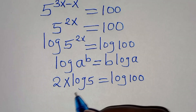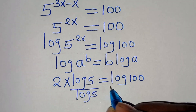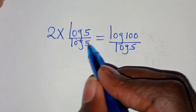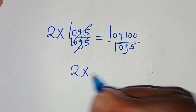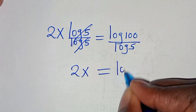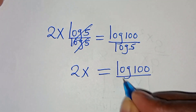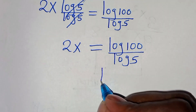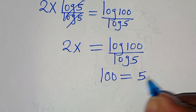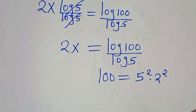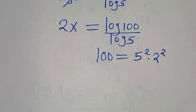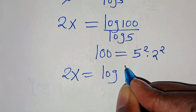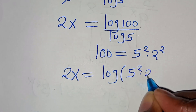Let's divide both sides by log 5. Log 5 and log 5 simplify, so we have 2x equal to log 100 divided by log 5. We can express 100 as 5 squared times 2 squared, so 2x equals log of 5 squared times 2 squared, all divided by log 5.